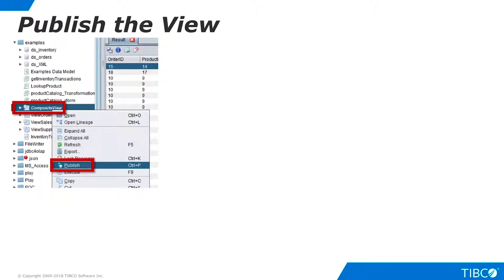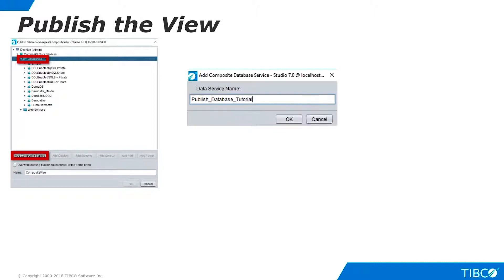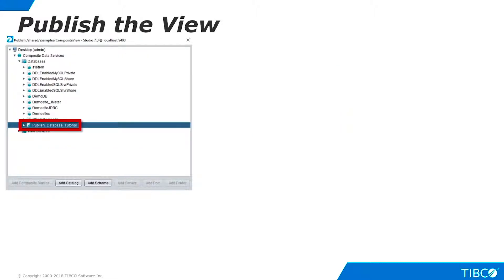Right-click Composite View and select Publish. As the dialog box shows, several virtual databases have already been published. We could publish to one of these, but for this example, let's create a new virtual database. Click Databases to indicate that you do not want to use an existing virtual database. Now click Add Composite Service and give the service a name. The new virtual database is created.